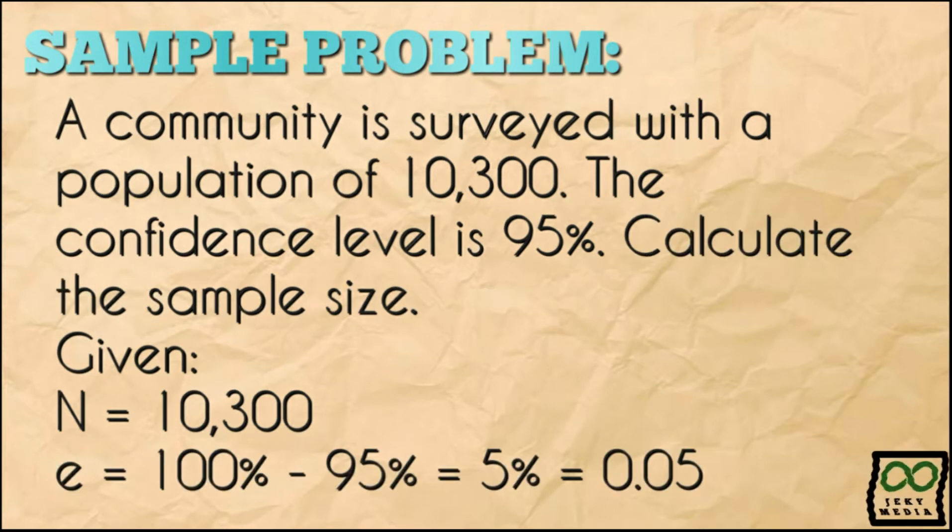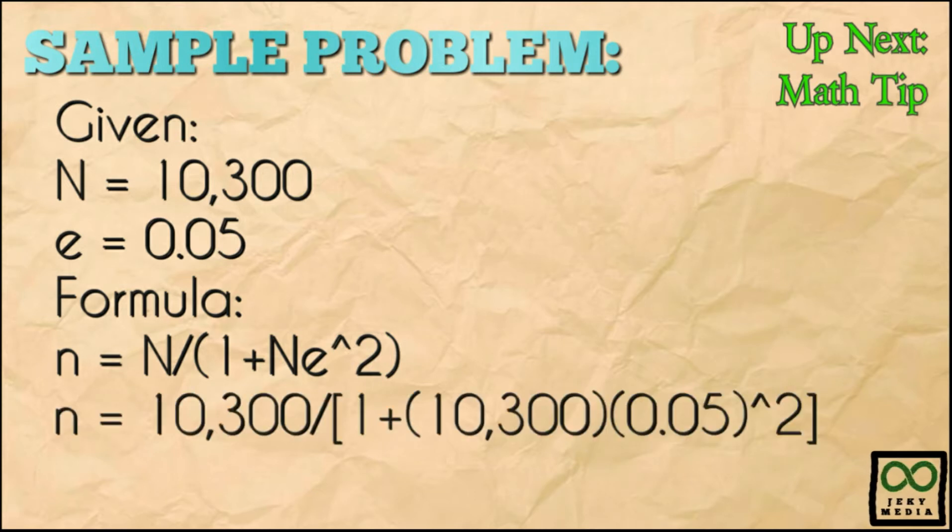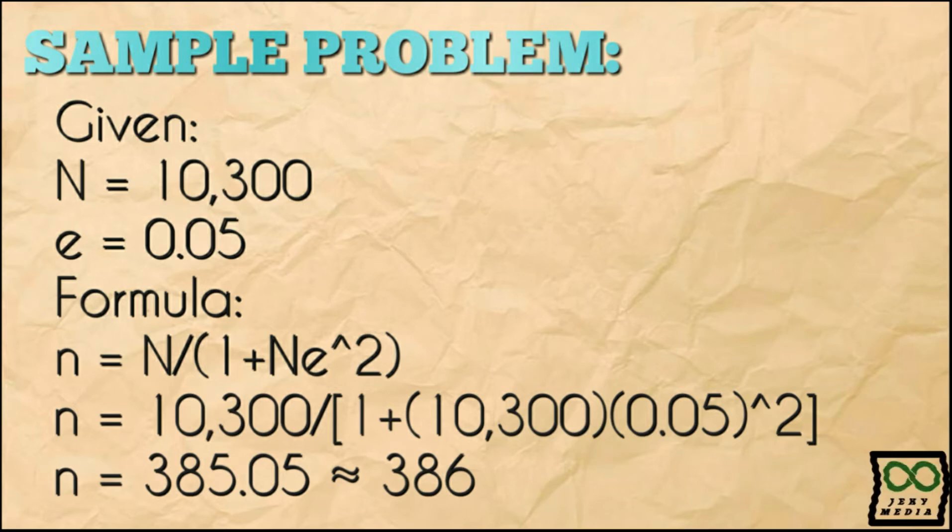Margin of error equals 100% minus the confidence level of 95%. The result is 5%. Converting to decimal form will become 0.05. Next, input values to the Slovin's formula. Sample size equals population size over 1 plus population size times margin of error squared. This will become 10,300 over 1 plus 10,300 times 0.05 squared. By calculating this, the result is 385.05. Rounding up to the nearest whole number will give you 386.